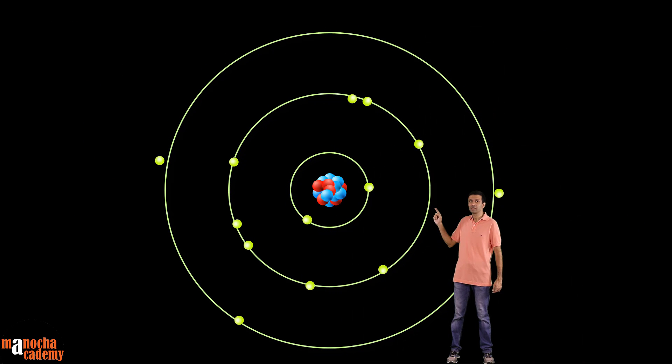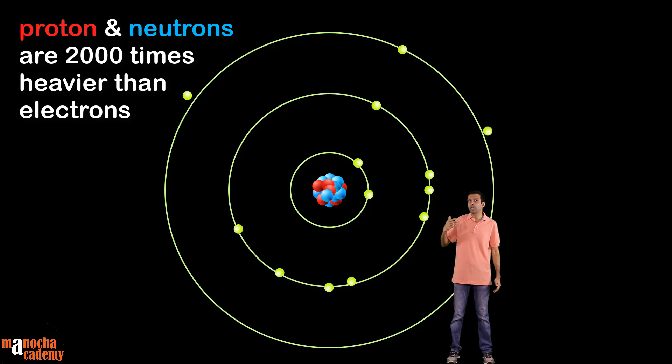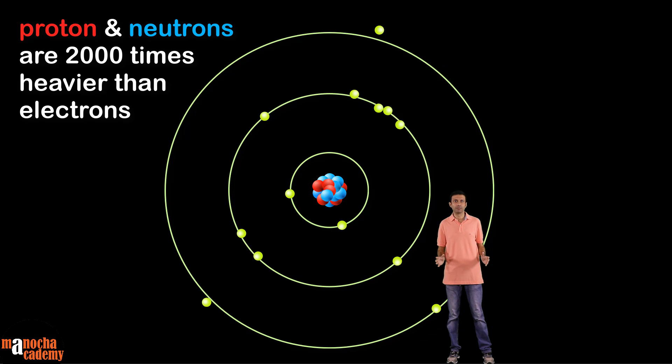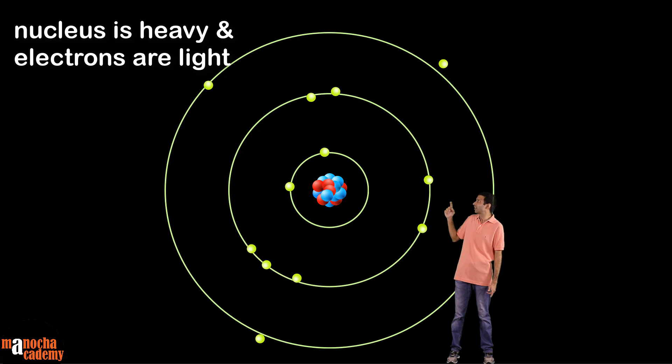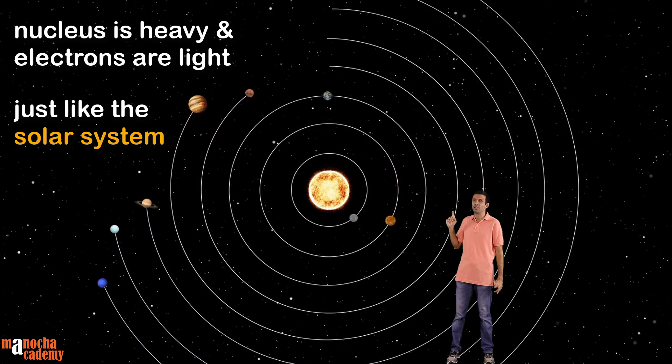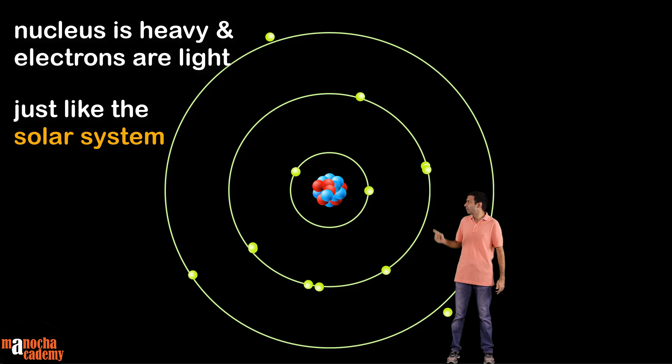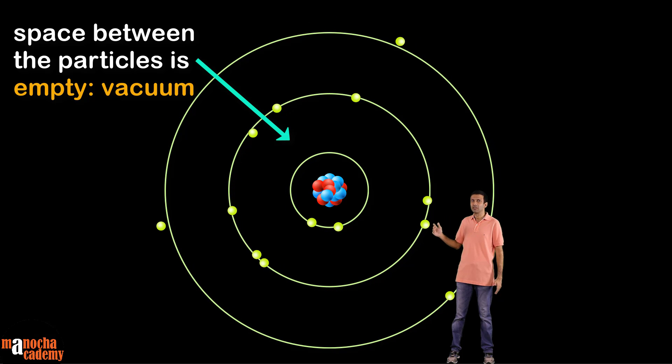The protons and neutrons in the nucleus are much heavier compared to the light electrons here. The mass of each proton or neutron is approximately two thousand times the mass of an electron. So almost the entire mass of the atom is sitting in the nucleus here. The atom has this very heavy sun and light planets spinning around it. Now do you know what's in the space between the nucleus and the electrons? Again, it's just like the solar system. This is just empty space, it's just vacuum.